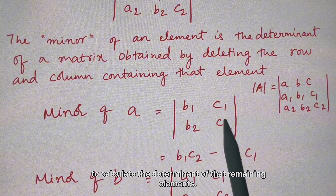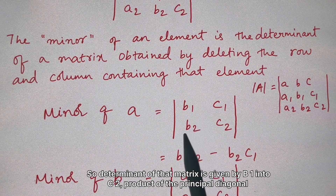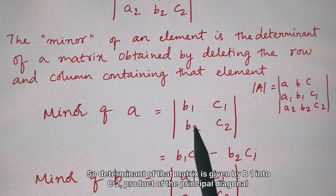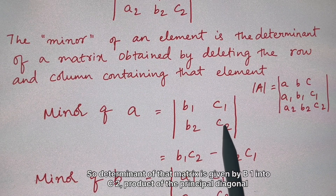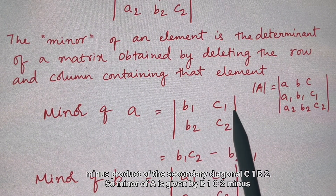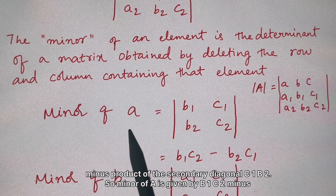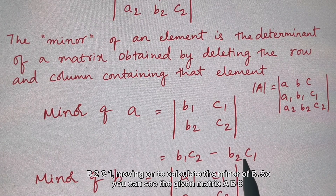The determinant of the remaining submatrix is calculated as the product of the principal diagonal minus the product of the secondary diagonal. So the minor of 'a' is given by b1·c2 minus b2·c1.